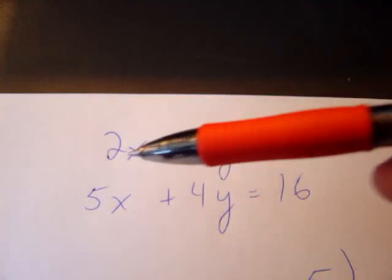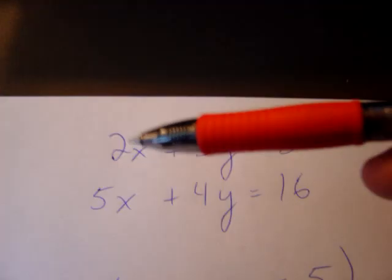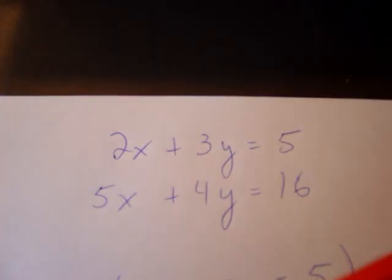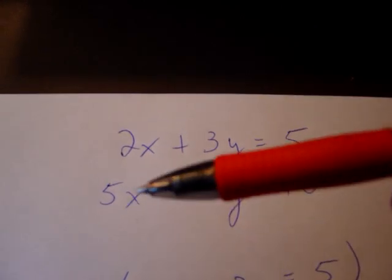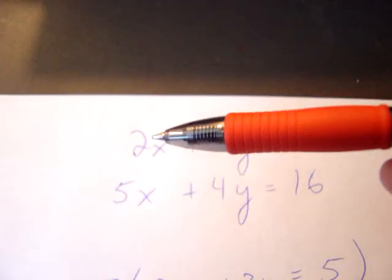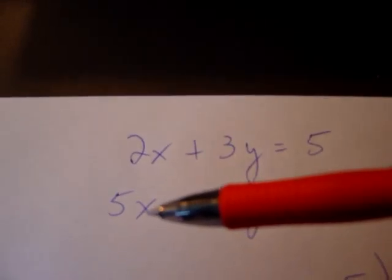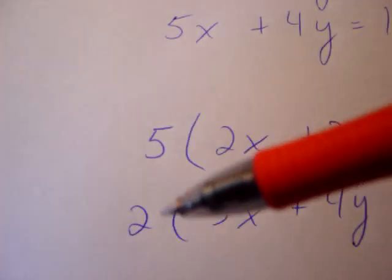So I need to think to myself, what's the smallest number that both 2 and 5 divide evenly into? That would be 10. 10 is the least common multiple. So how do I get 2x to become 10x? We're going to multiply by 5. How do I get 5x to become 10x? We're going to multiply by 2.